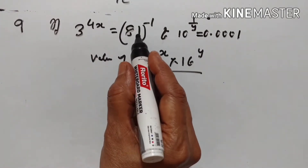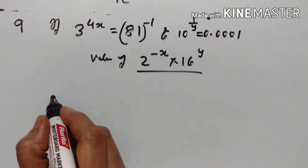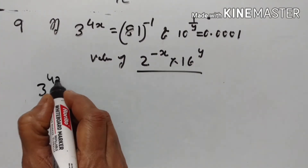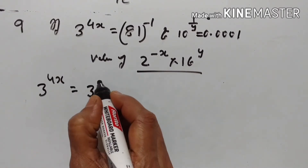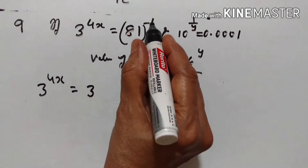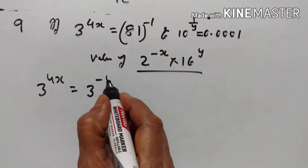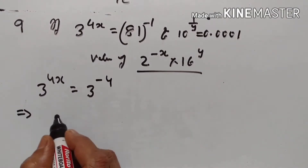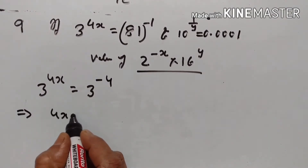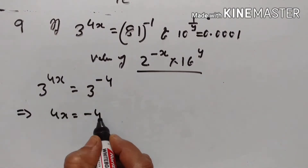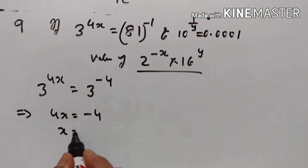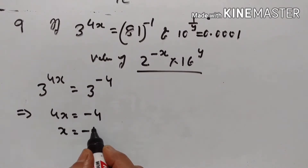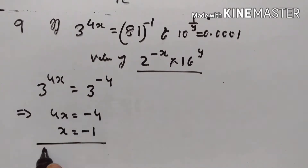81 is equal to 3 raised to the power of 4. So 3 raised to the power of 4x is equal to 3 raised to the power of 4 into minus 1, which is equal to minus 4. So 4x is equal to minus 4. Therefore x is equal to minus 1.